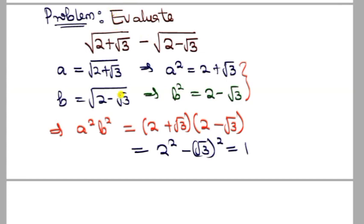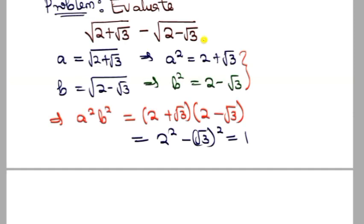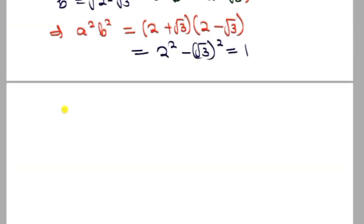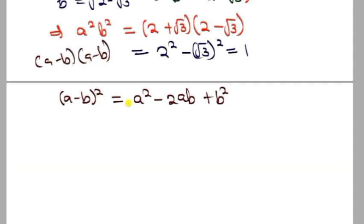Remember from our substitution, we need to find a - b. Recall that (a - b)² = a² - 2ab + b². Let's substitute what we have.